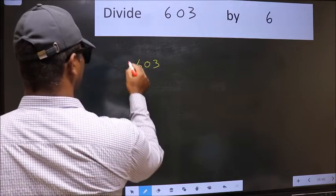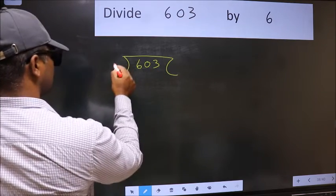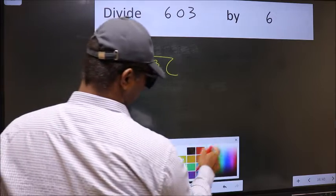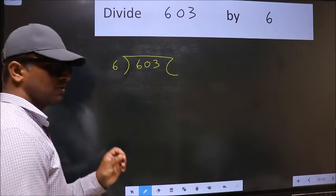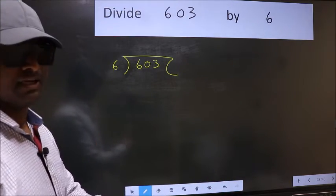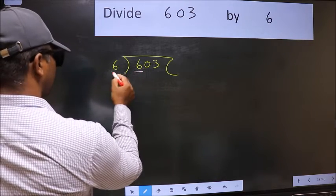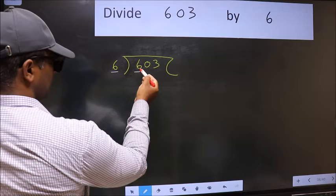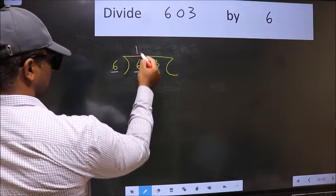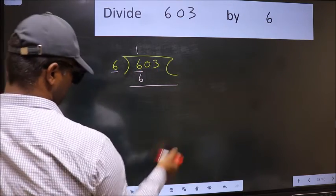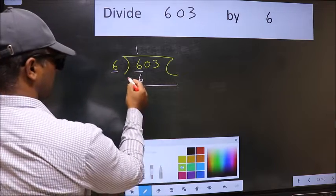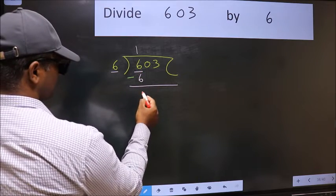603 and 6 here. This is your step 1. Next, here we have 6, here also 6. When do we get 6 in 6 table? 6 once 6. Now we should subtract. 6 minus 6, 0.